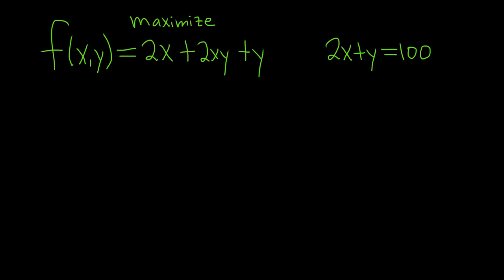Hi everyone. In this video we're going to maximize this function subject to this constraint over here, 2x plus y equals 100, and we're going to use something called Lagrange multipliers.